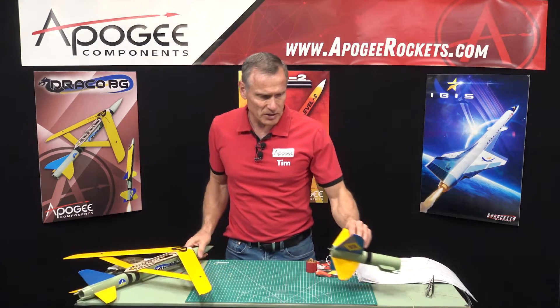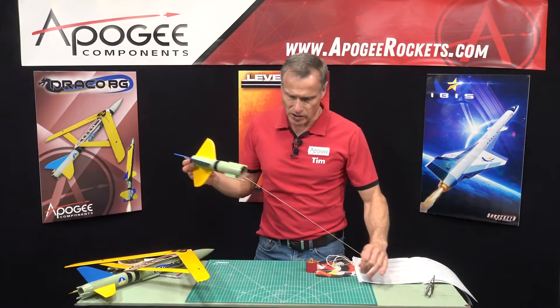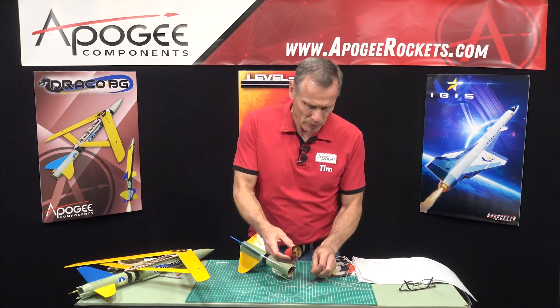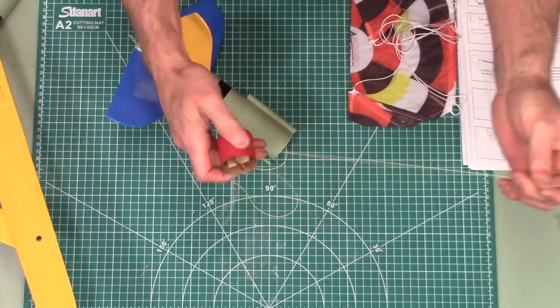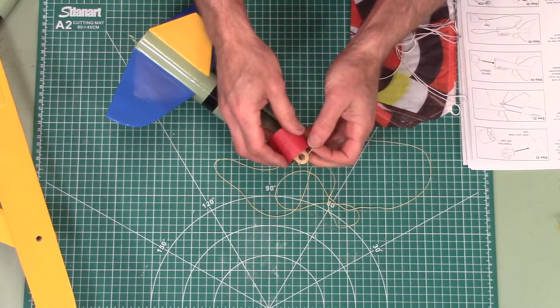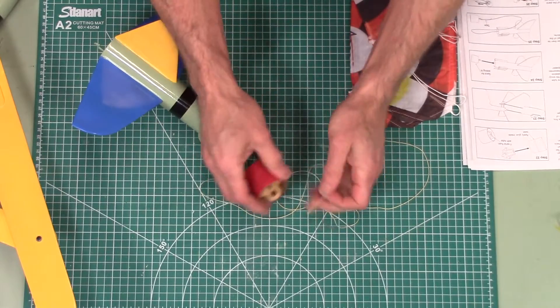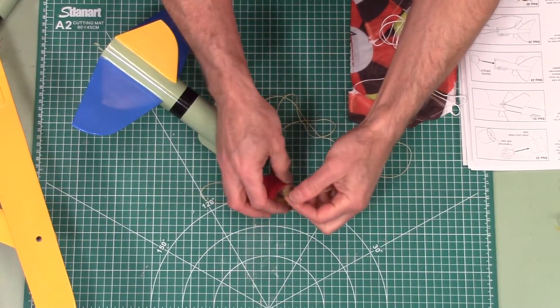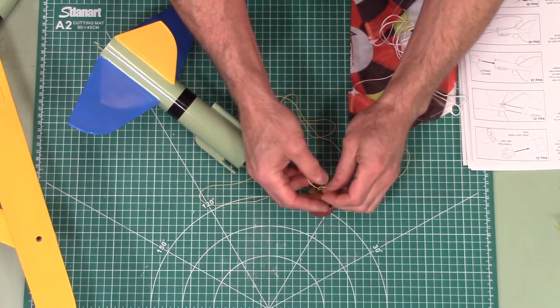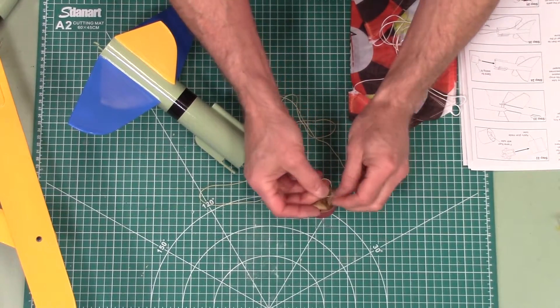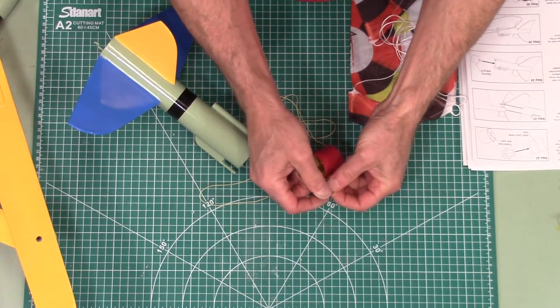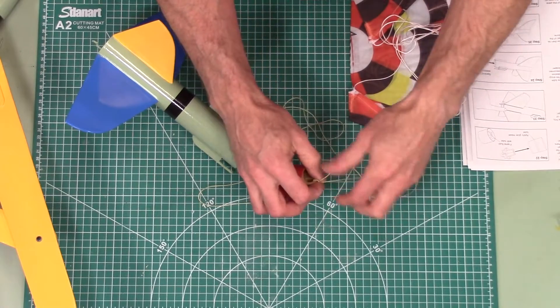We skipped a couple of steps here in building the booster. One of them was tying the piston onto the shock cord and then attaching the parachute. And this is step number 25. So basically we're just going to tie the shock cord onto this piston. Just like that.